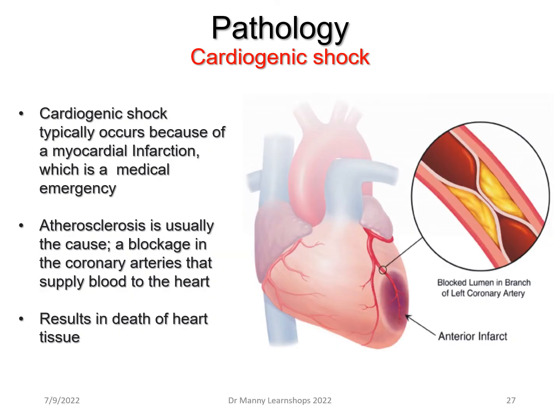Then we look at the pathophysiology. Cardiogenic shock typically occurs because of a myocardial infarction, which is a medical emergency. It usually occurs because of atherosclerosis, which results in arteriosclerosis and coronary artery disease — a blockage to the coronary arteries that supply blood to the heart — which can result in death of heart tissue: myocardial ischemia and infarction.